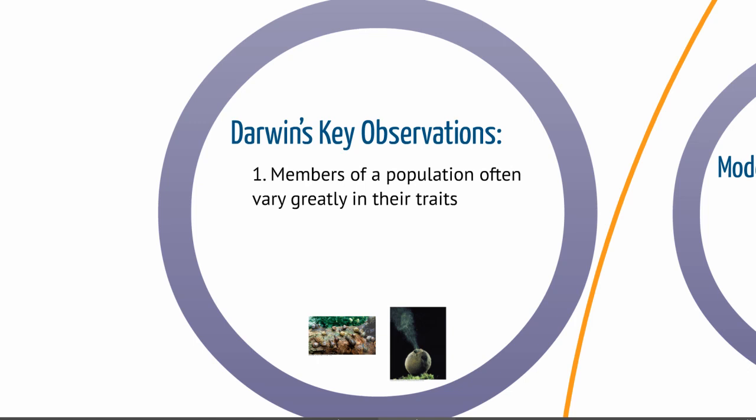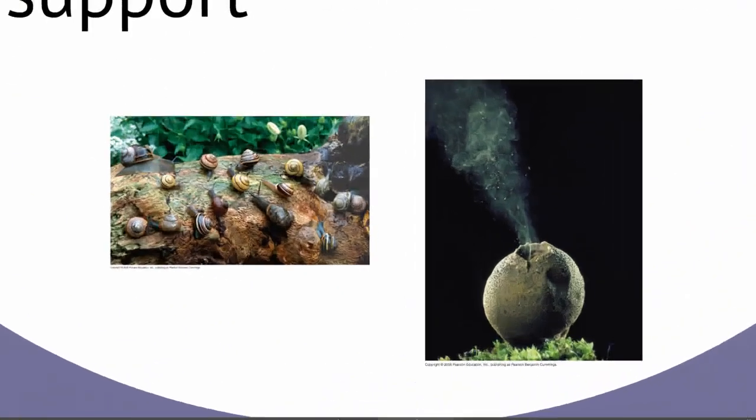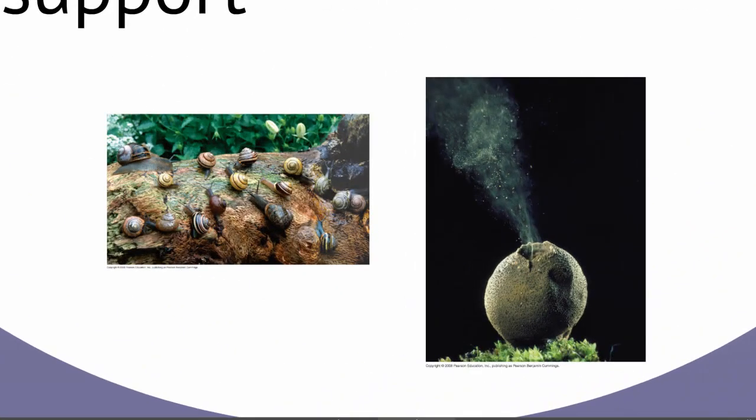The first observation is that members of a population often vary greatly in their traits. The second one is that species generally produce more offspring than the environment can support. Let's look at some examples of this.